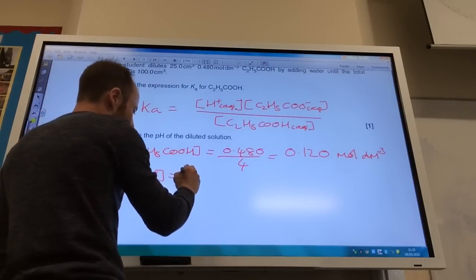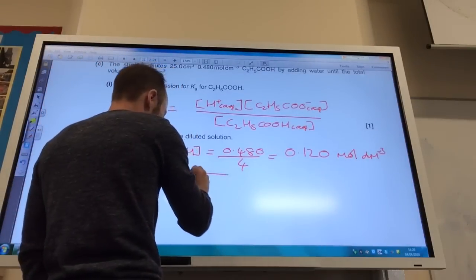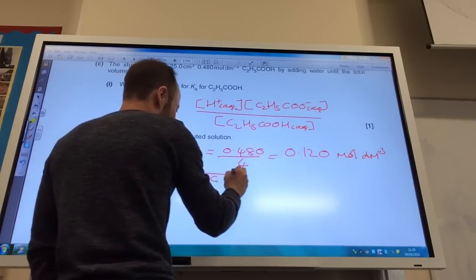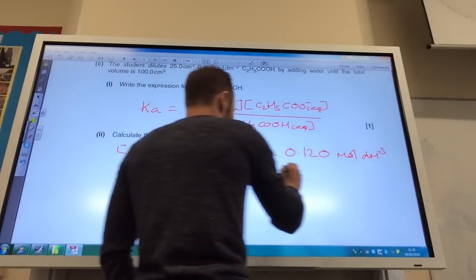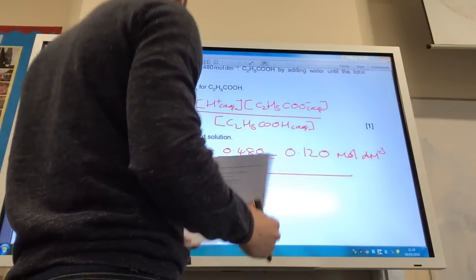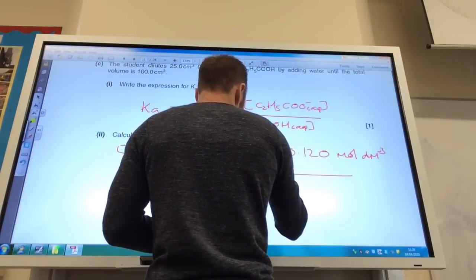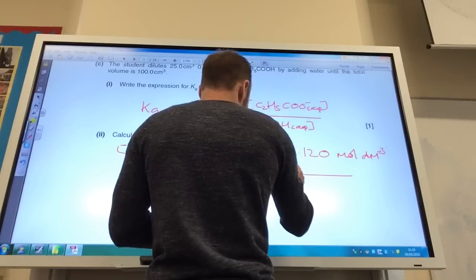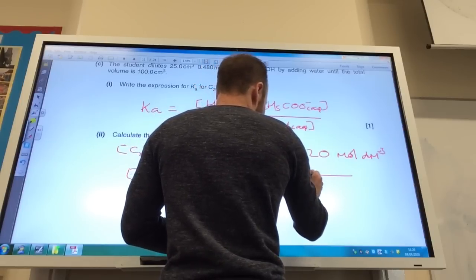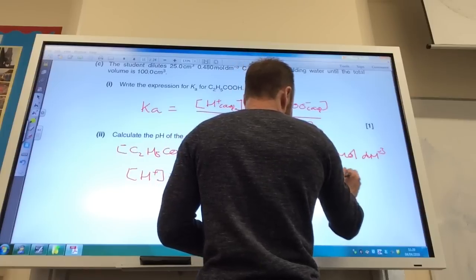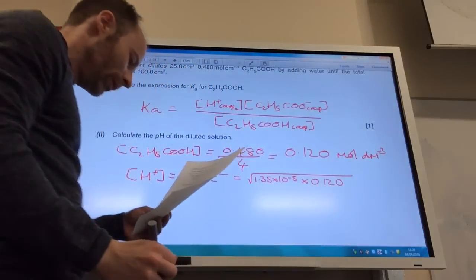The concentration of H plus is the square root of Ka times your concentration. So my Ka they told me earlier as being 1.35 times 10 to the minus 5. My concentration I've just worked out to be 0.120.